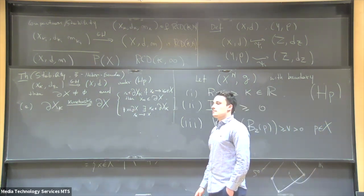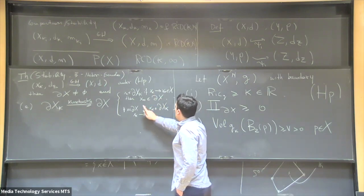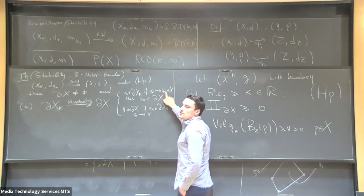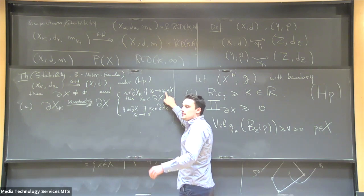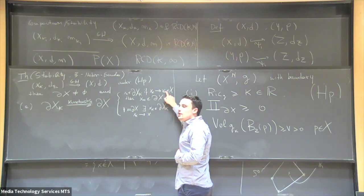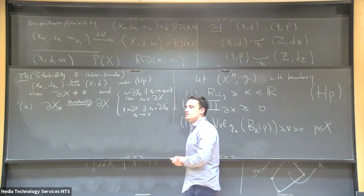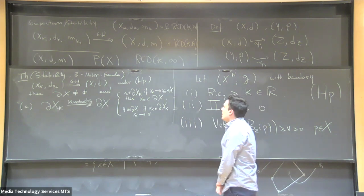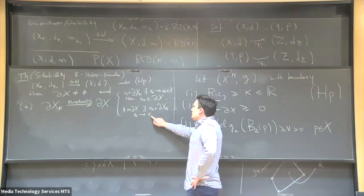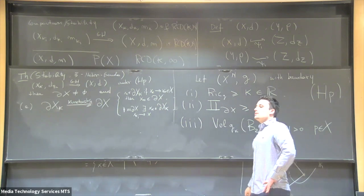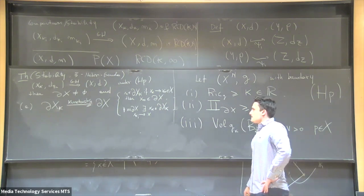So for the recovery direction you pass to a sub-sequence, but the forward direction holds for the full sequence given that X_k converges. This is the Kuratowski convergence.